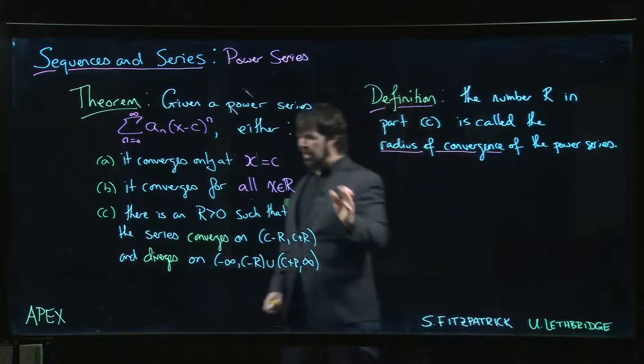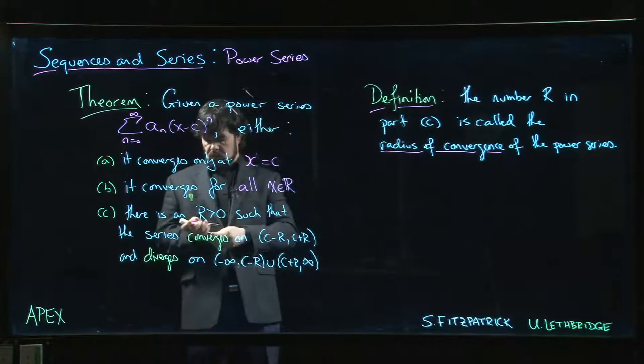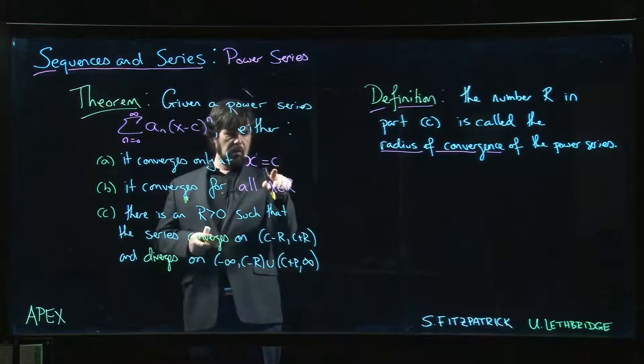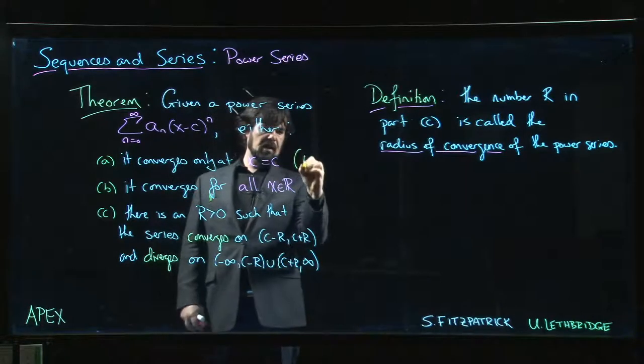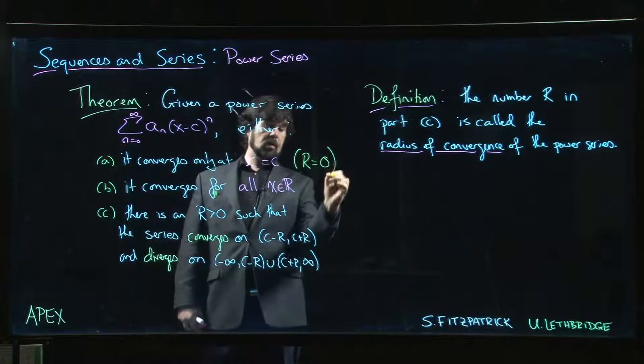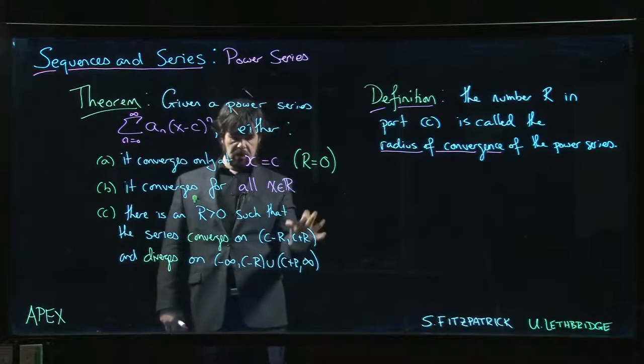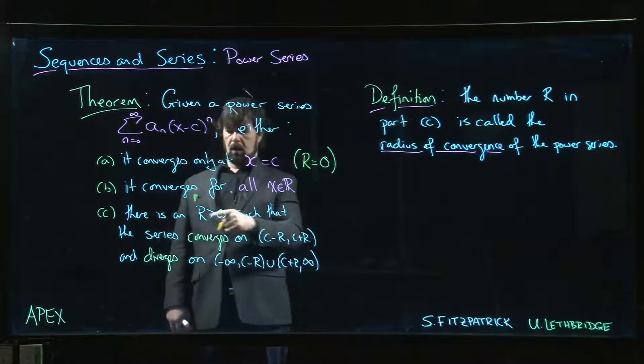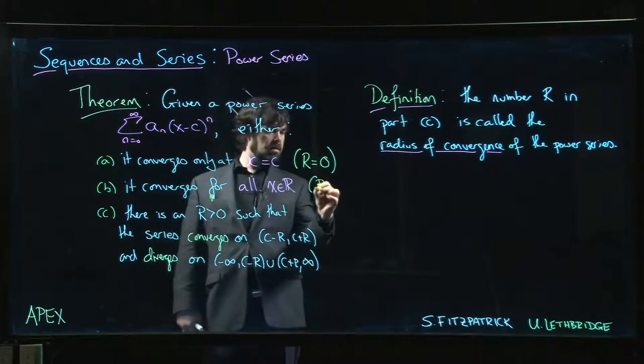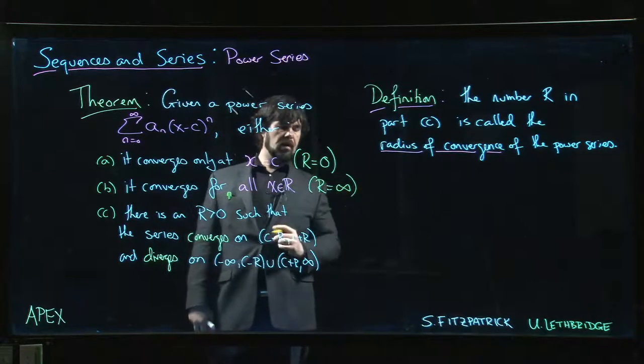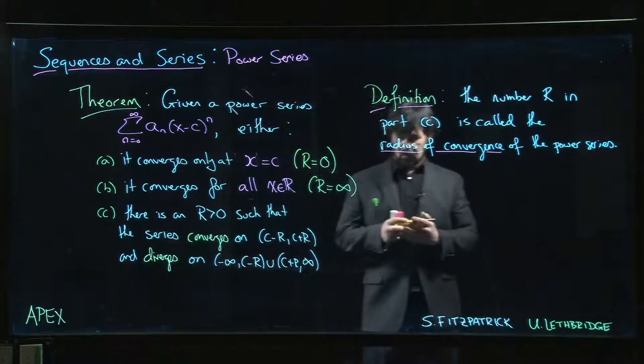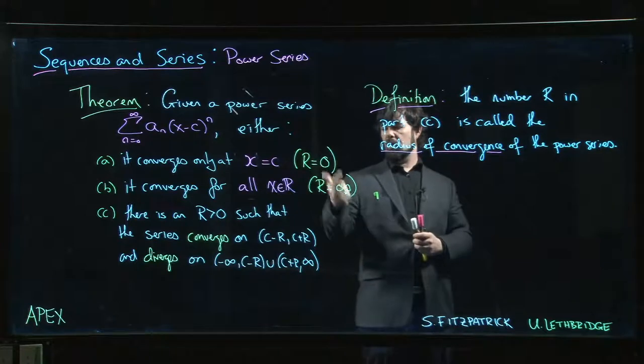You can cover cases A and B as well. In case A, if C is the only place where it converges, the radius is 0. We would put R equal to 0. If it converges everywhere, we can just say the radius is infinite - R is equal to infinity. So we could have 0, infinity, or some finite value in between. Those are the three possibilities.